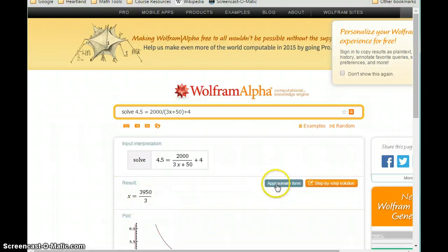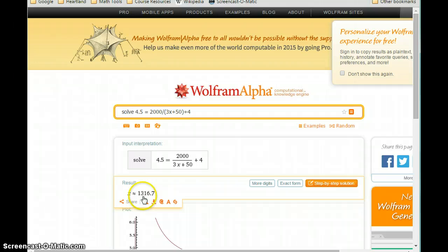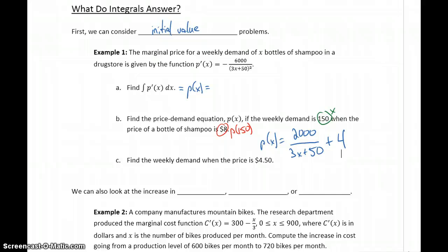In this case, we get a fractional result, so if we click on approximate form, we get a value of about 1,317 if we round that to the nearest whole number. So the weekly demand when our price is $4.50 will be x equals approximately 1,317 units.